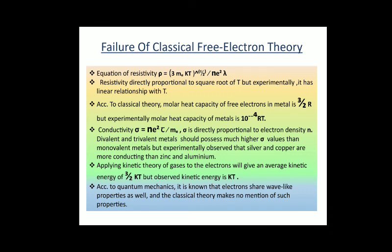The failures of the classical free electron theory: first, resistivity formula predicts resistivity is directly proportional to √T, but experimentally it has a linear relationship. Second, classically the molar heat capacity of free electrons in metal is (3/2)R, but experimentally it is (10⁻²)RT. Third, conductivity σ is directly proportional to electron density n, so divalent and trivalent metals should possess much higher conductivity than monovalent metals—but silver and copper are more conductive than zinc and aluminum. Fourth, average kinetic energy of an electron is (3/2)kT classically, but the observed kinetic energy is only kT. These are the drawbacks of the classical free electron theory.